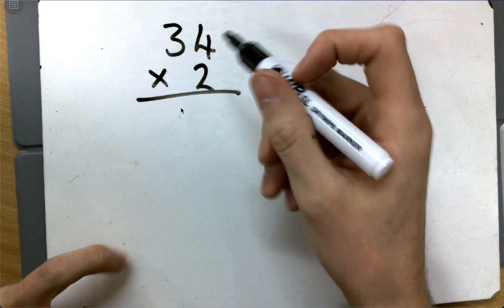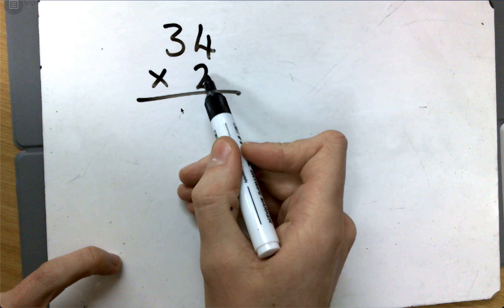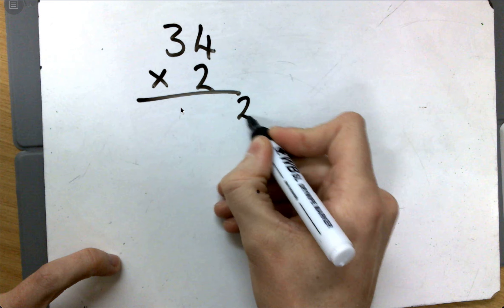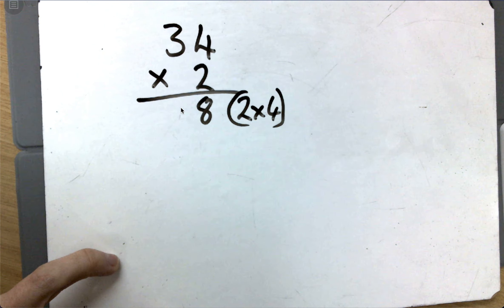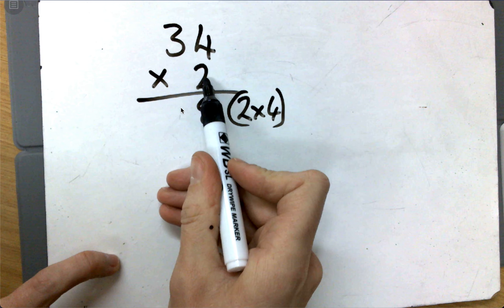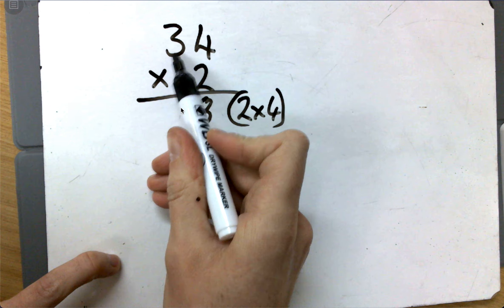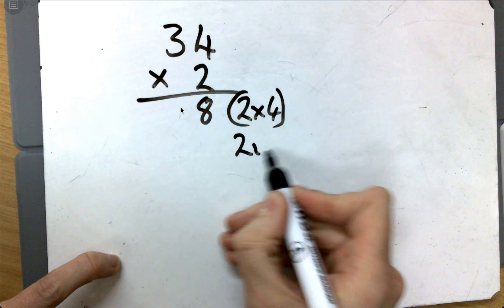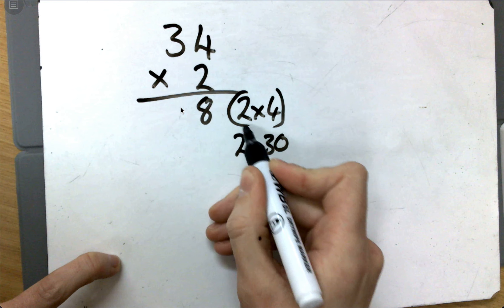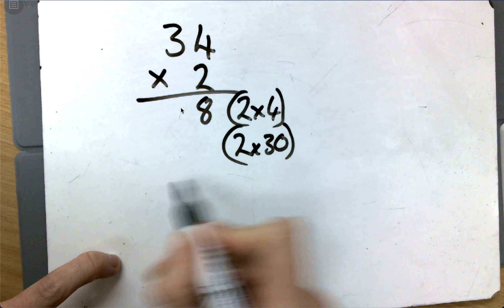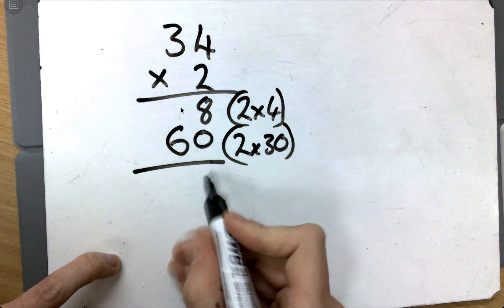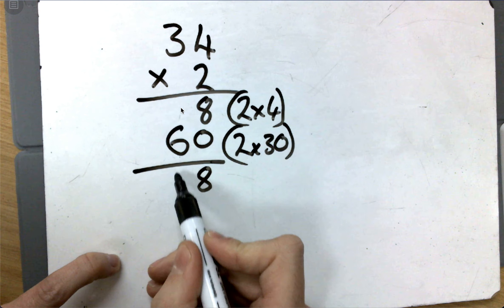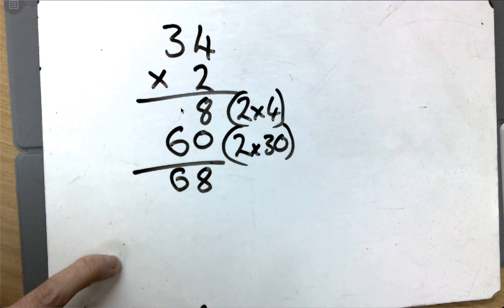We'll have a quick go through. So the first thing I'm going to work out is two times four. Two times four is eight. And then the next bit I look at is two times three, but it's not three — it's three tens. So it's two times 30. Two times 30: I know two times three is six, gets ten times bigger, it's going to be 60. I can then do eight add zero, eight add zero is eight, and the six gives 68.